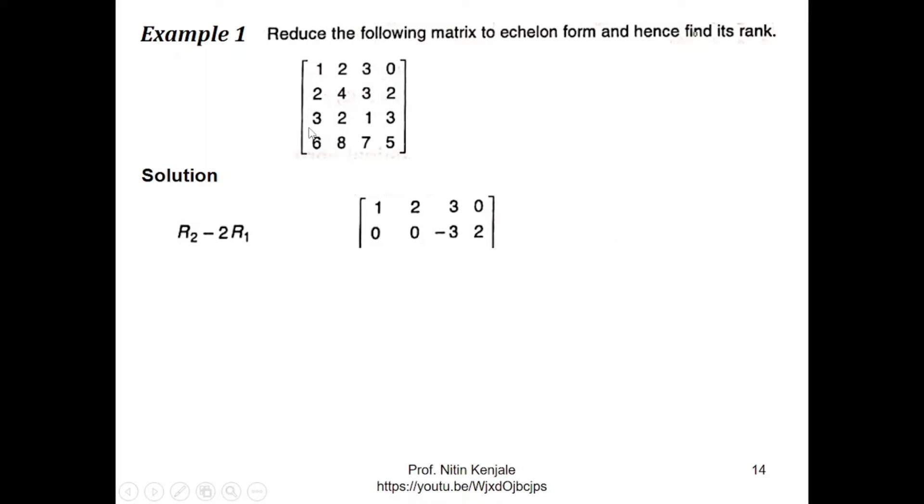Then we will do R3 minus 3 times R1. So we have 0 here, minus 4 here, 1 minus 9 is equal to minus 8 and 3 minus 0 is 3.